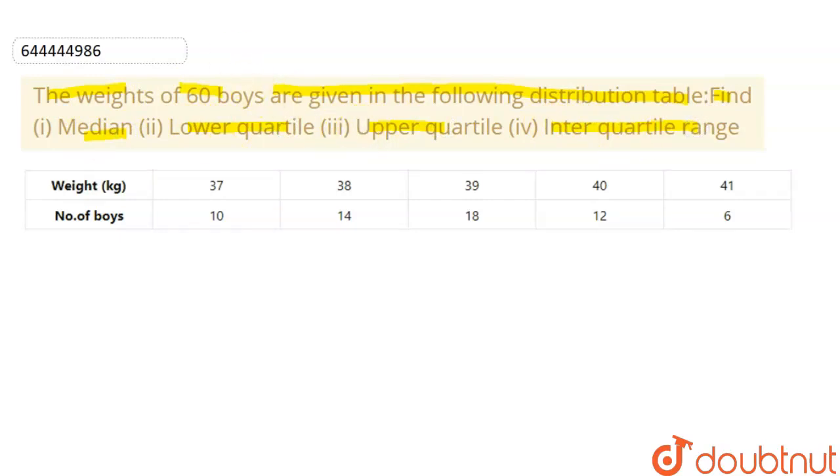So first we need to find the median. For median, we'll find a column that is CF, which is cumulative frequency. How we find it? We keep on adding the frequencies coming next to this.